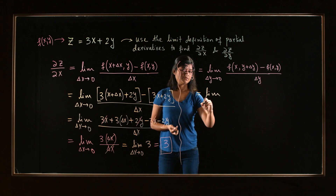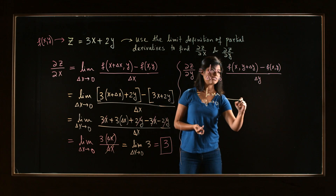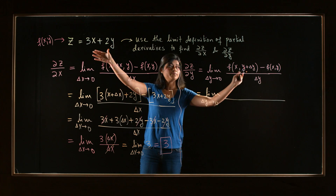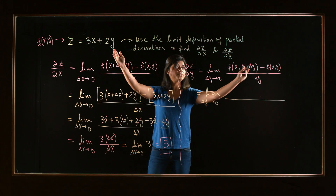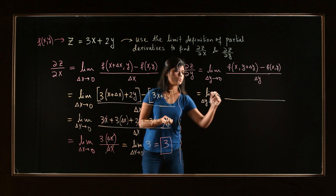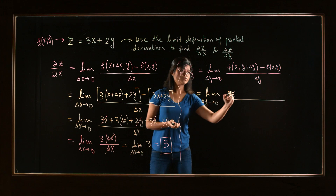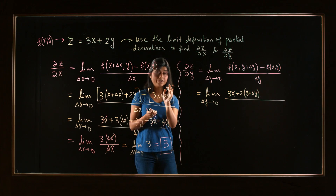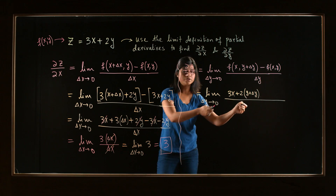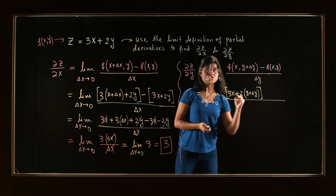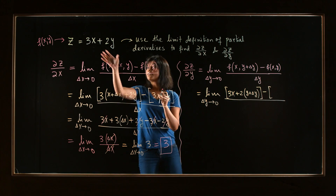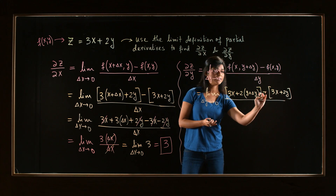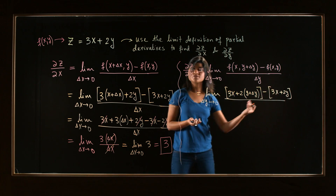Now write down each of these expressions using the function. Come back here — this is the expression for the function. The x remains as it is, y is replaced by y plus delta y. So you have 3x — it doesn't change — plus 2 times, and instead of y you write y plus delta y. Remember and be very careful: this 2 should be multiplied to the entire thing, 2 will distribute. Then you subtract the entire function just by itself, so 3x plus 2y. Again, keep this expression inside a bracket. Make sure the negative sign will distribute for both terms.